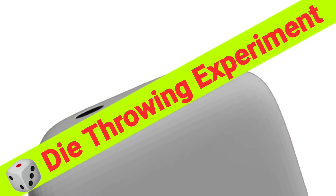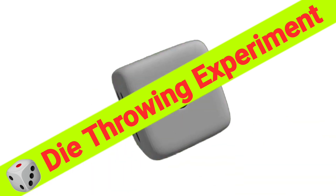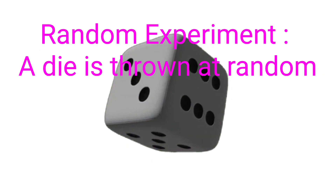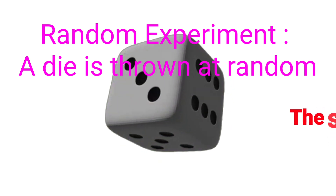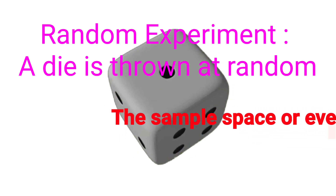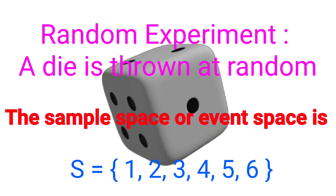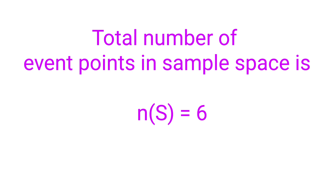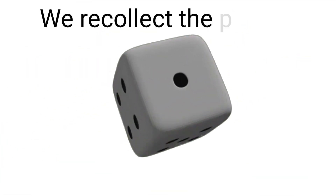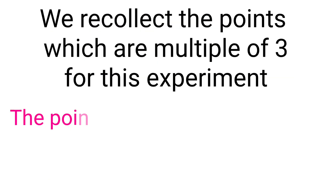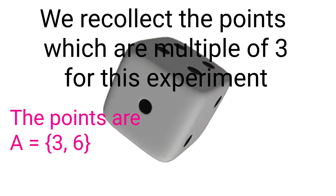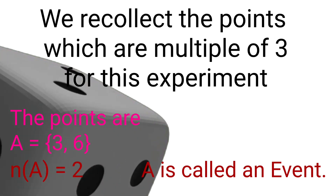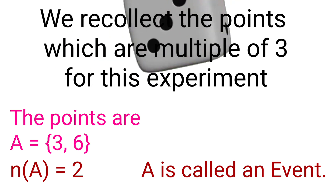Now let us focus on die throwing problems. First problem: throwing a fair die — find the sample space. The outcomes of the experiment are any one of the 6 points: 1, 2, 3, 4, 5, or 6. Therefore the sample space S = {1, 2, 3, 4, 5, 6}, and n(S) = 6. Now let A be the event corresponding to occurrence of a multiple of 3. So A = {3, 6}, and the number of points favorable to A, n(A) = 2.